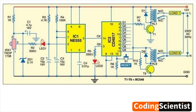The relay, RL1, is connected in series with the main power supply to the bulb. When the relay is activated, it closes the circuit, allowing current to flow to the bulb and turning it on.